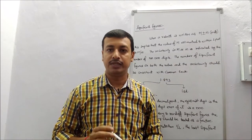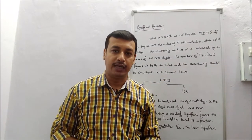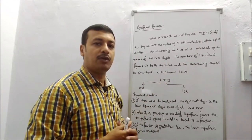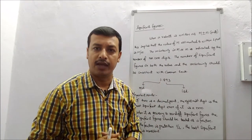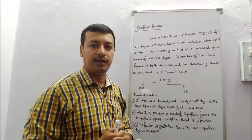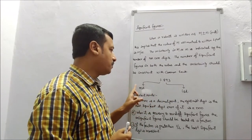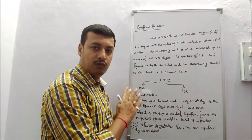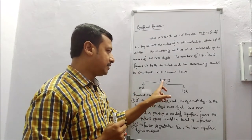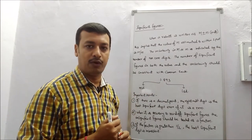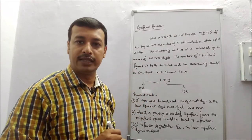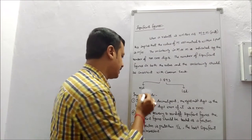The number of significant figures in both the value and the uncertainty should be consistent within common sense — it should be consistent, the value should not fluctuate. For example, if an experimental data value is 1.893, then its leftmost part — the part on the left side of the decimal point — is called the MSD, which we call the most significant digit.